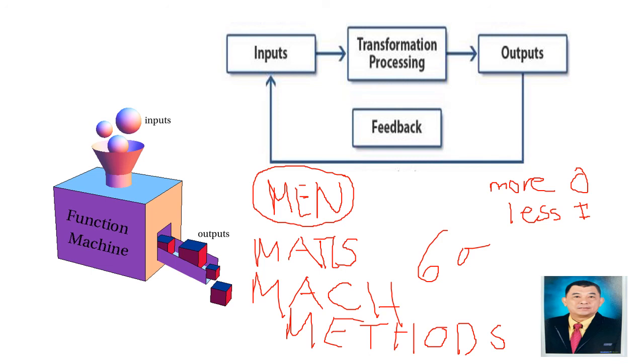That is a very simple explanation of the IPO model: inputs, process or transformation, and output. And what is very important is the feedback loop toward continuous development and continuous improvement. That ends our tutorial video for today. Thank you for your continuous patronage. Thank you for subscribing. Thank you for sharing this tutorial video. I'll see you next time. Always keep safe. Thank you.